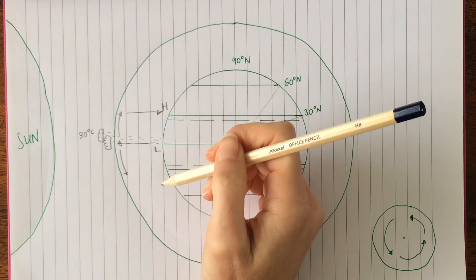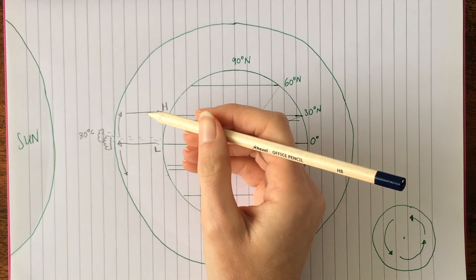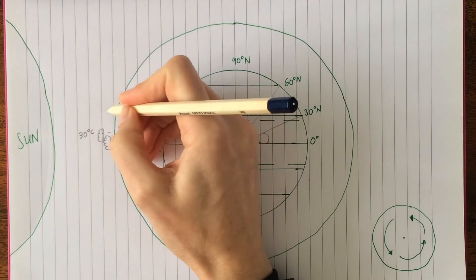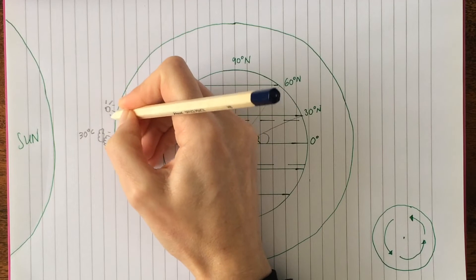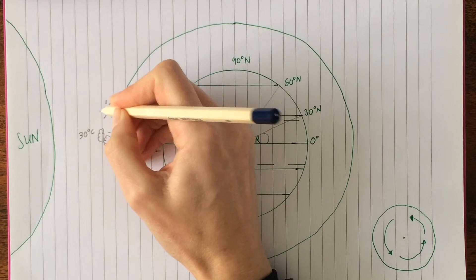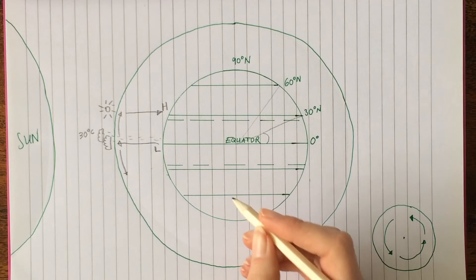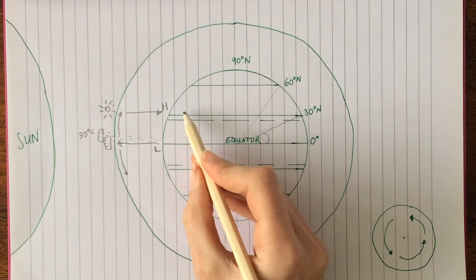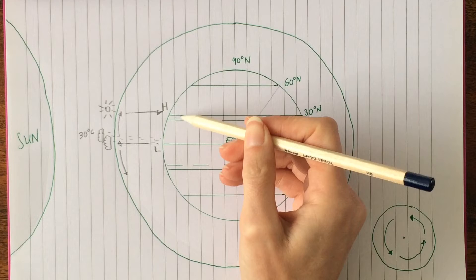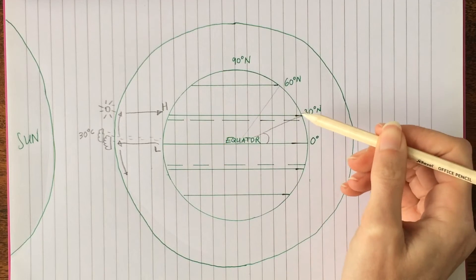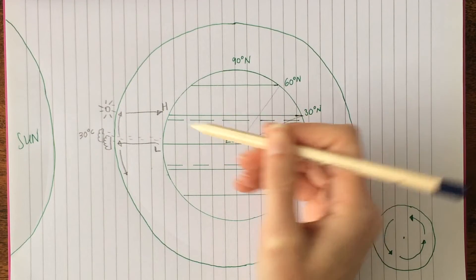Now the opposite happens when the air sinks — the moisture inside the air evaporates off to give a nice clear blue sky and a lot of sunshine. And that's why we get the deserts just here.